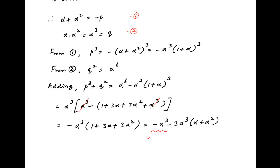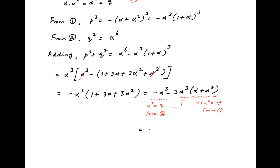Now from result 2, alpha cubed equals q, and from result 1, alpha plus alpha squared equals minus p. Substituting these values, the right hand side equals minus q minus 3q times minus p, which equals minus q plus 3pq, which equals minus q times (1 minus 3p).